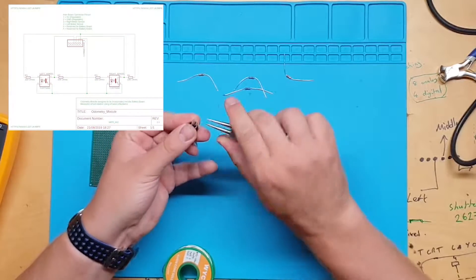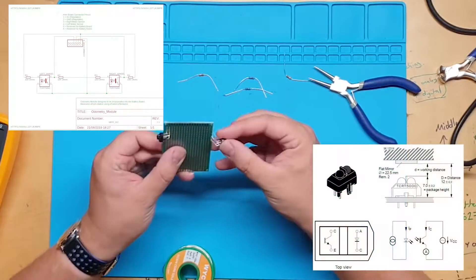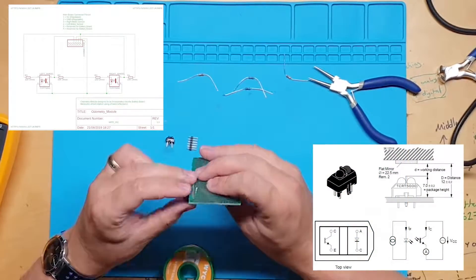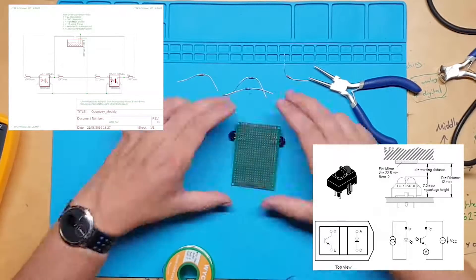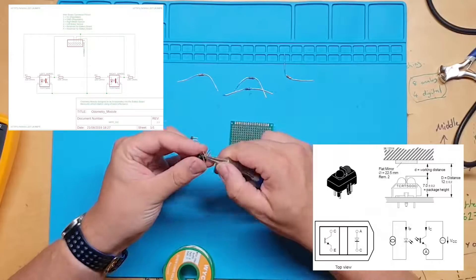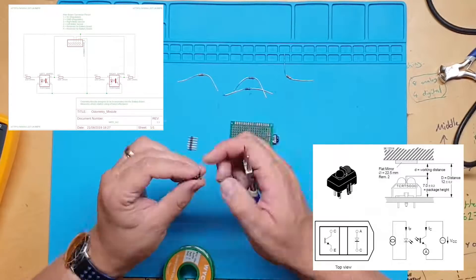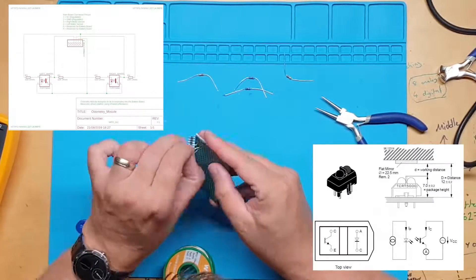We will place the components first starting with the TCRT5000 sensors. I have bent the pins by 90 degrees, take note of their orientation and ensure that you know which diode is the infrared sensor and which diode is the detector. More information can be found at Leap.UK.